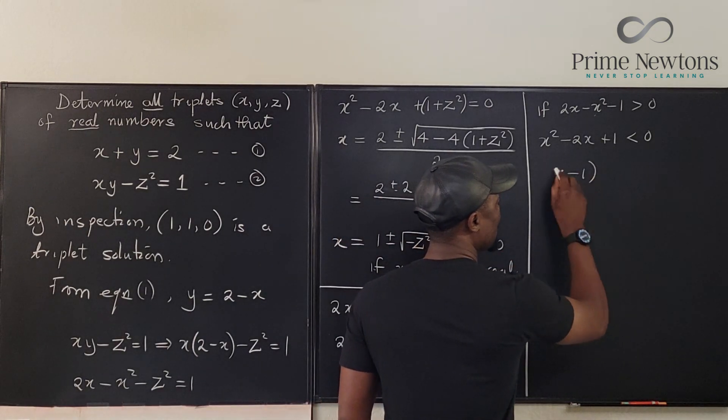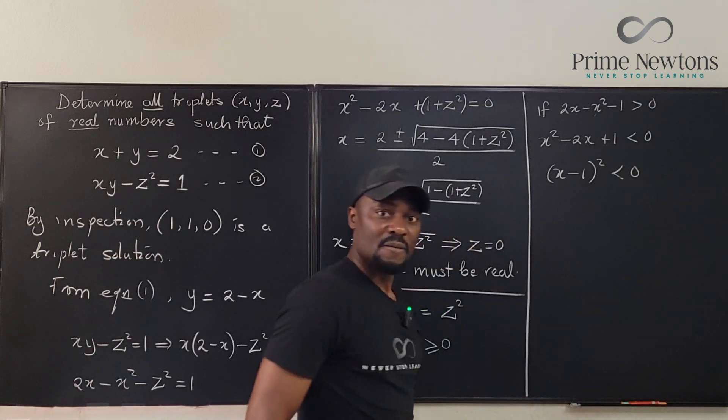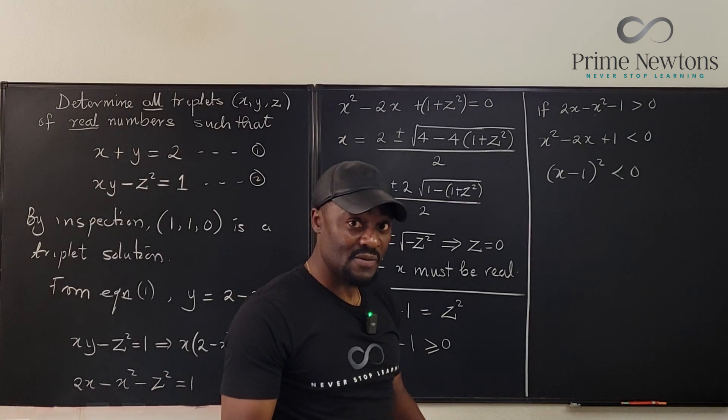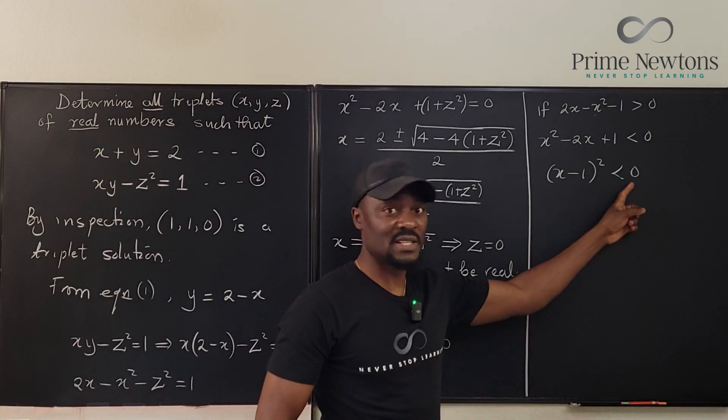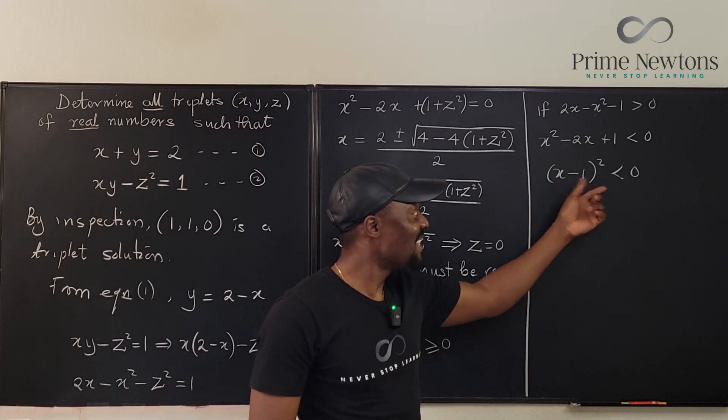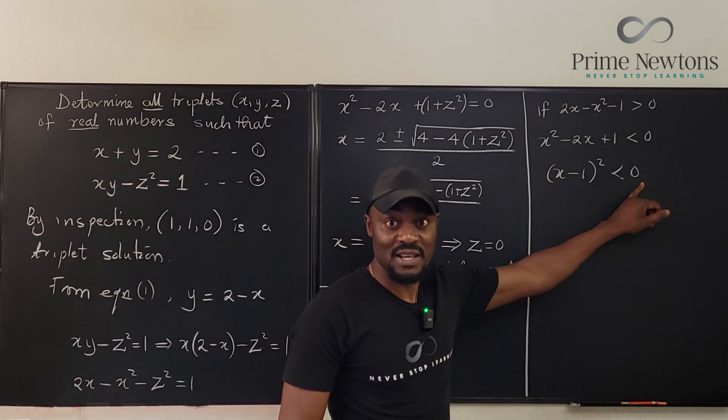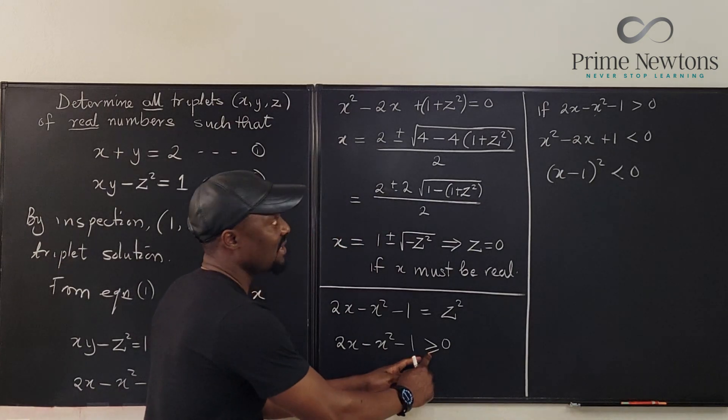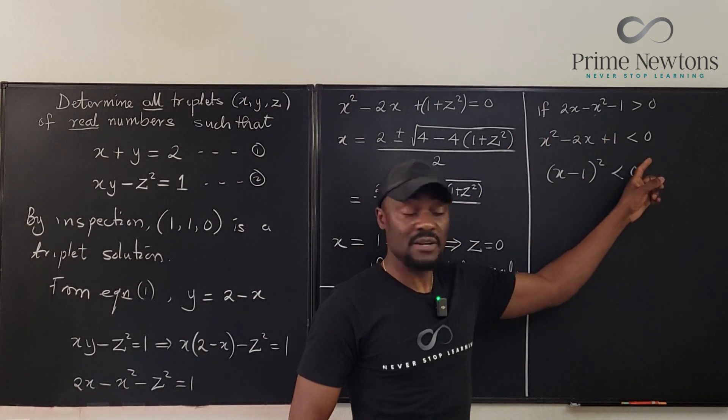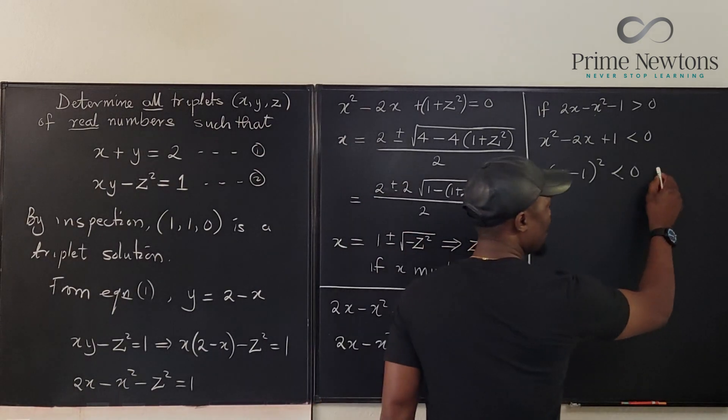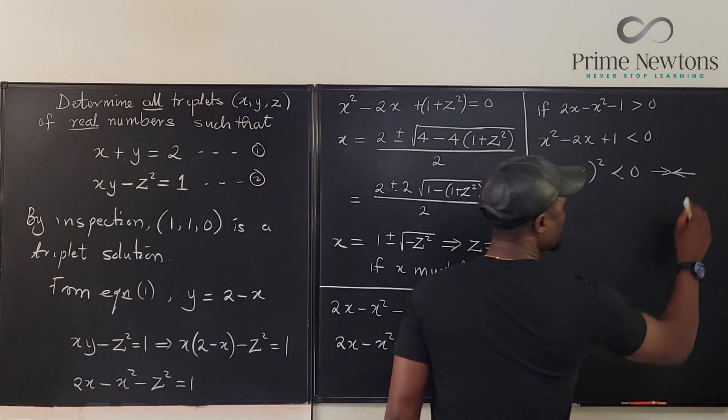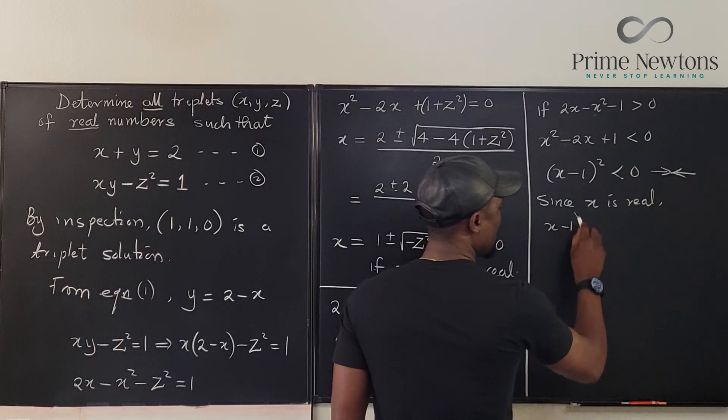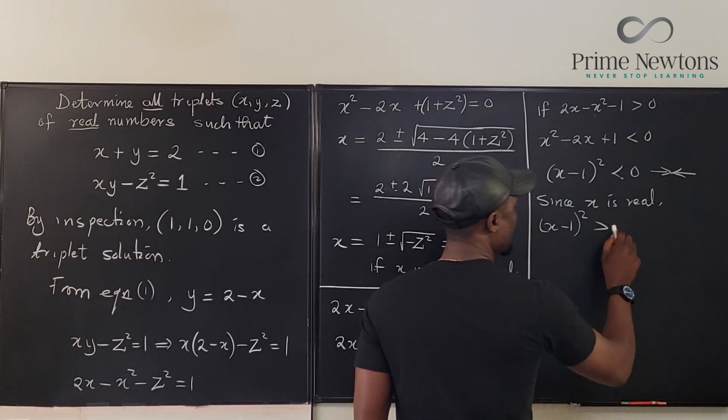But this is a perfect square. Look, this is x minus 1 squared. Because x is a real number, 1 is a real number, the difference between two real numbers is real, and the square of a real number must be greater than 0. So if x is a real number, then the square of this x minus 1 has to be greater than or equal to 0, but we're looking for it being less than 0, which does not happen. By the way, this greater than sign changed to less than because I multiplied by minus 1. But this is a contradiction. If x is real, this is a contradiction. Since x is real, x minus 1 squared must be greater than or equal to 0.